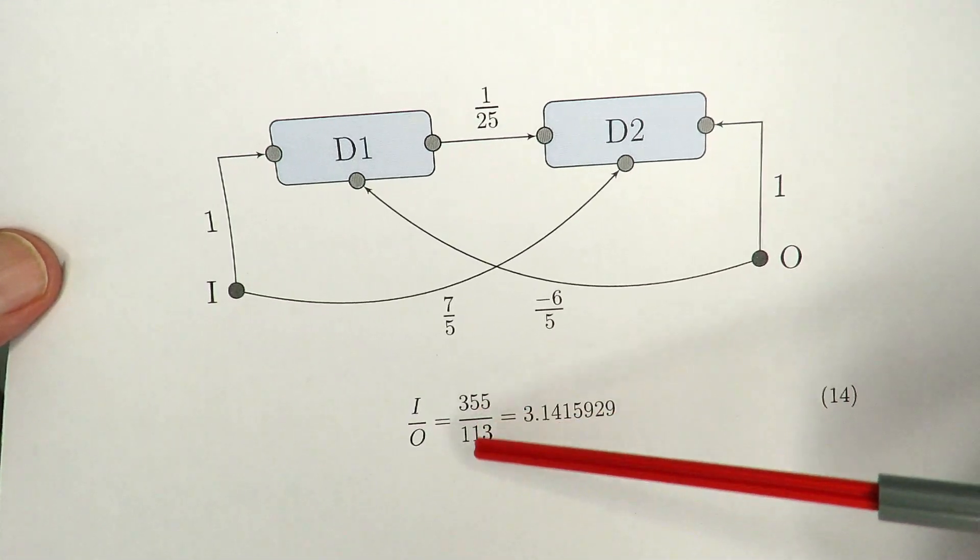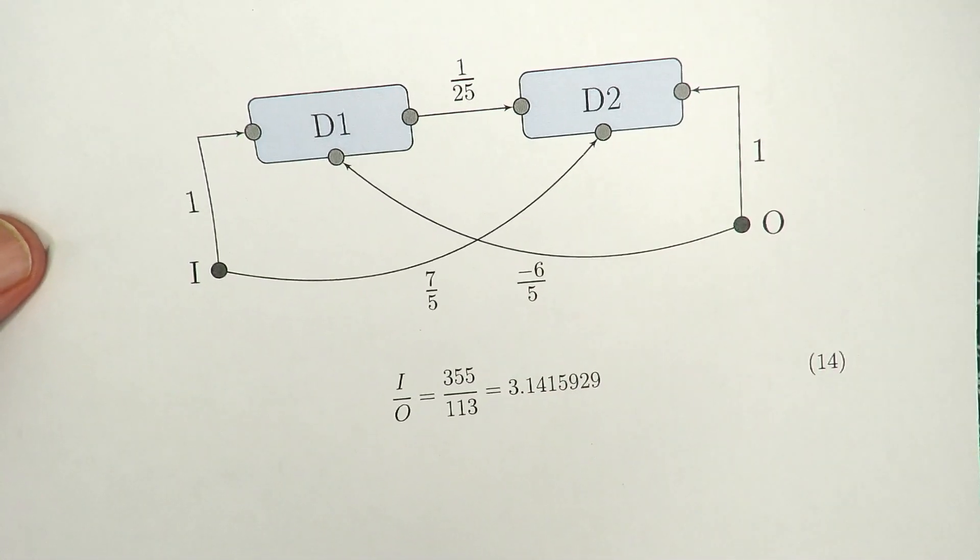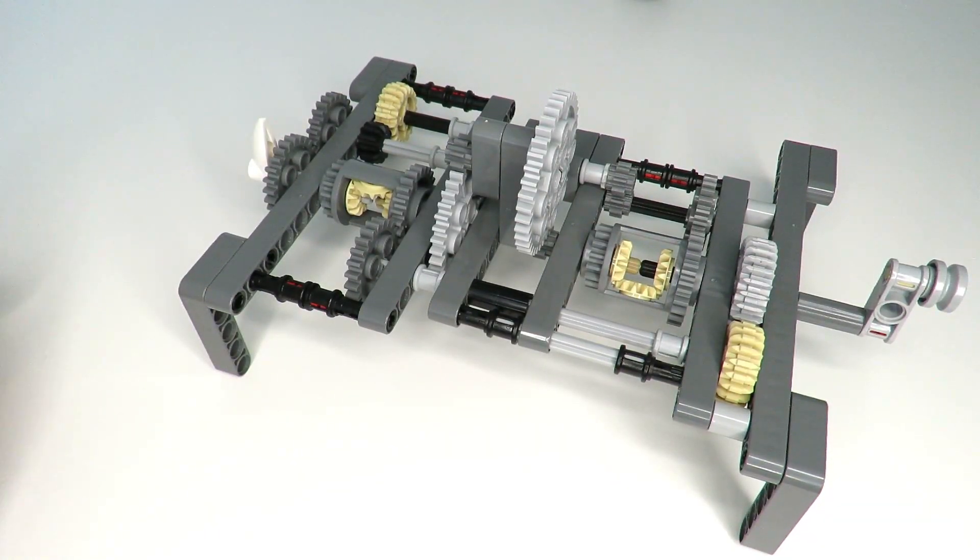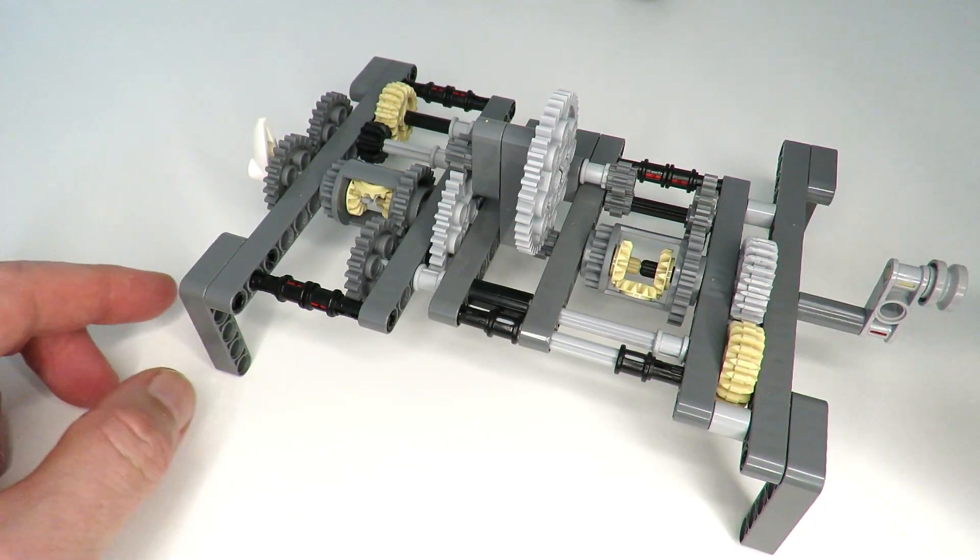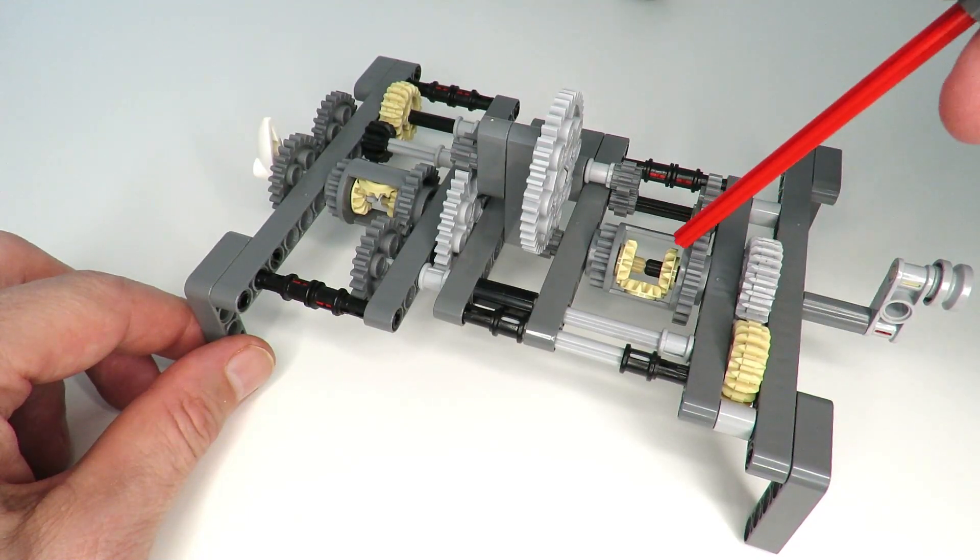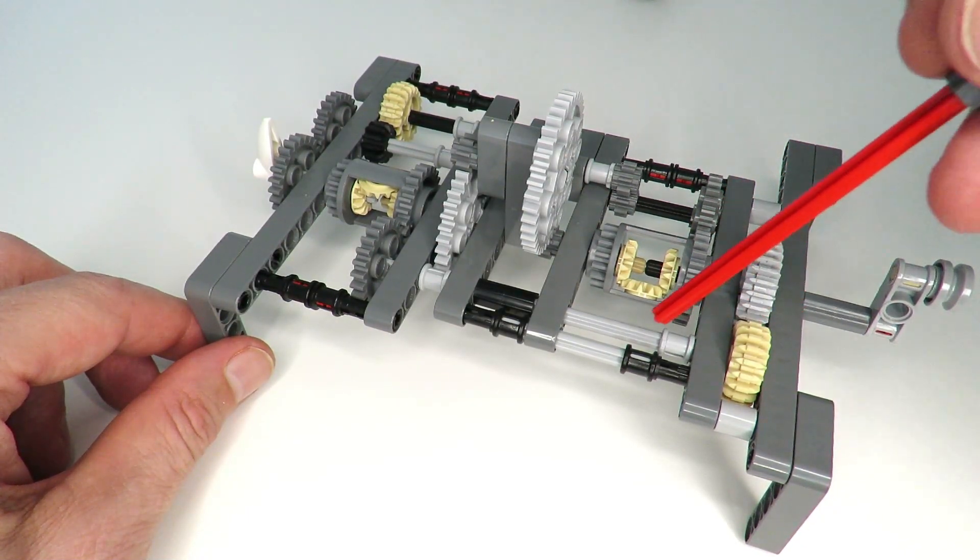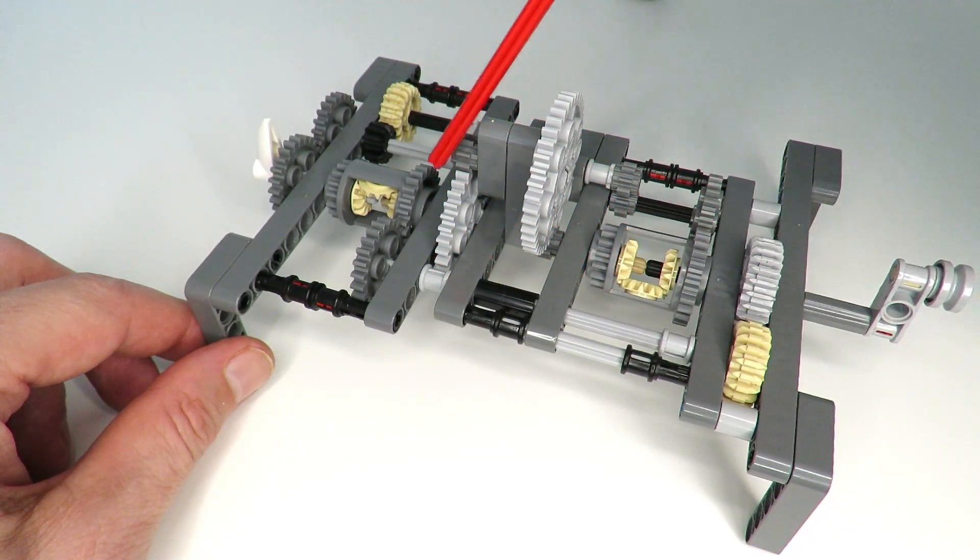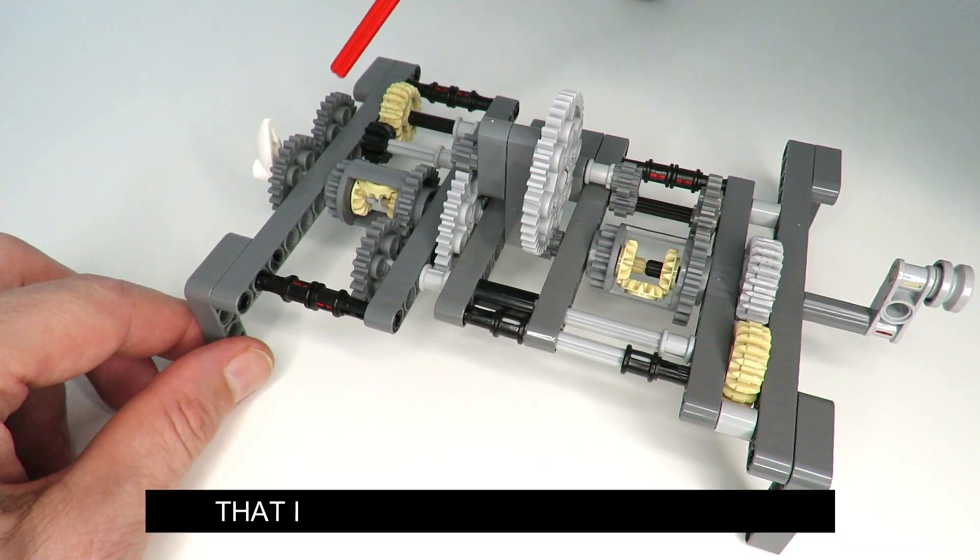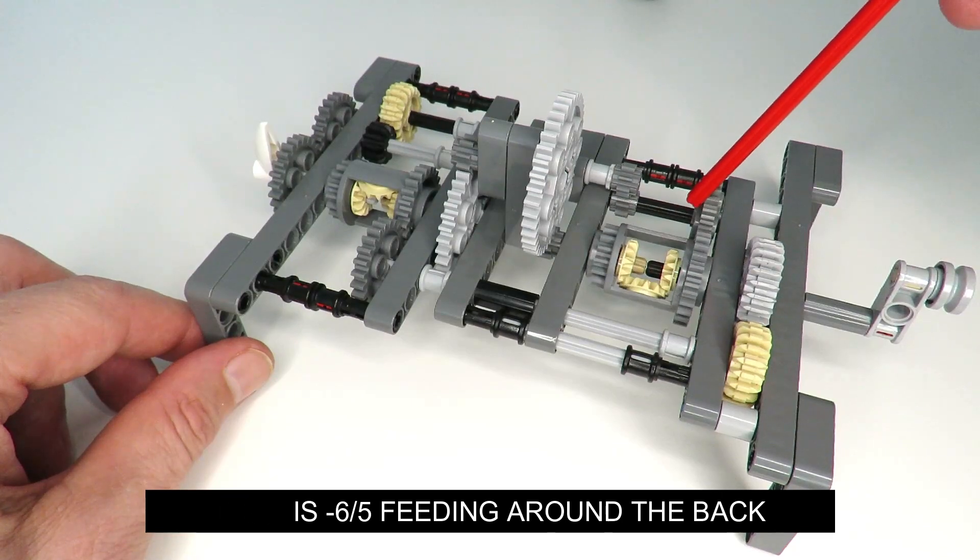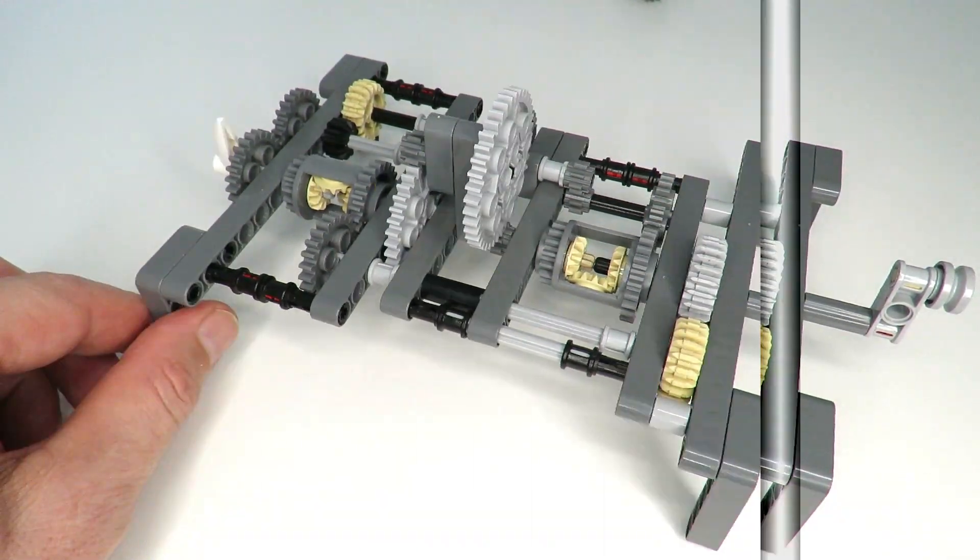Okay, so here's the excellent implementation of that gearing mechanism. Over here we've got our input handle. This goes through our gearing ratio of one straight to this differential. This is our seven to five coming back around here. Got our 125 to one between the differentials there, and we've got that minus six coming back around to the input differential along here.